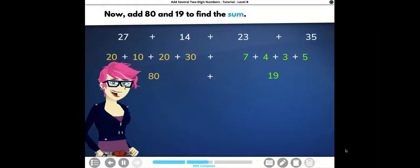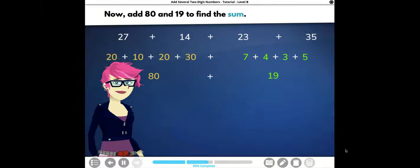Now add 80 and 19 to find the sum. All right, we have to add them up, boys and girls. So we have 80 plus 19. Well, I know 80 plus 10 is 90. And I add my nine ones. That gives me what, everybody? 99. Well, that was totally math-tacular. So, the sum of 27, 14, 23, and 35 is 99.